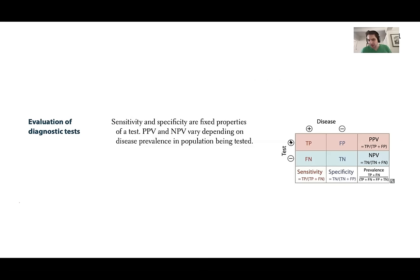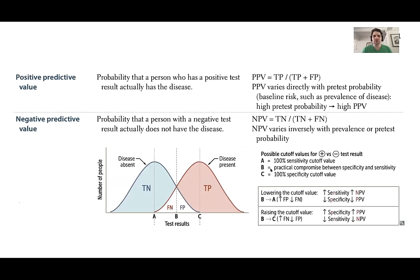Sensitivity goes down the column — everyone with the disease. Specificity — everyone without the disease. Positive predictive value: how good the test is positively at predicting positive results. Negative predictive value: going across horizontally, how good a negative test is. If you got an antigen test and it came back negative, with 88% confidence you're actually negative. Sensitivity and specificity look at vertical disease columns; positive and negative predictive value look at horizontal test quality.